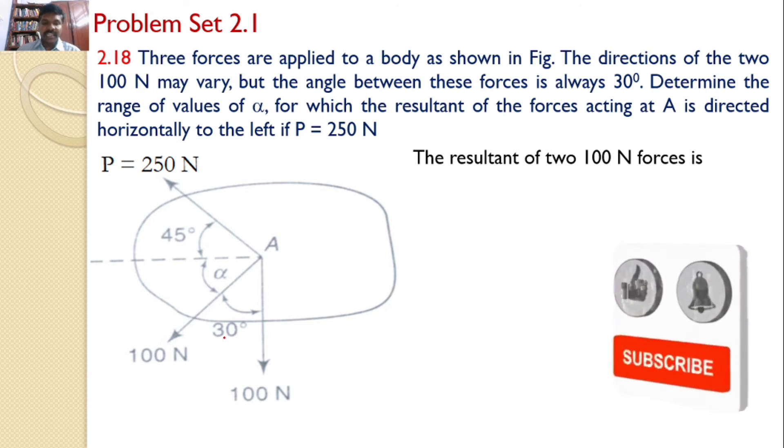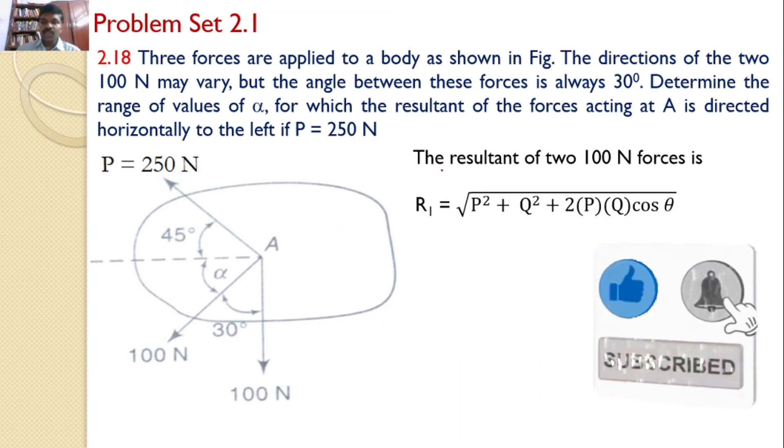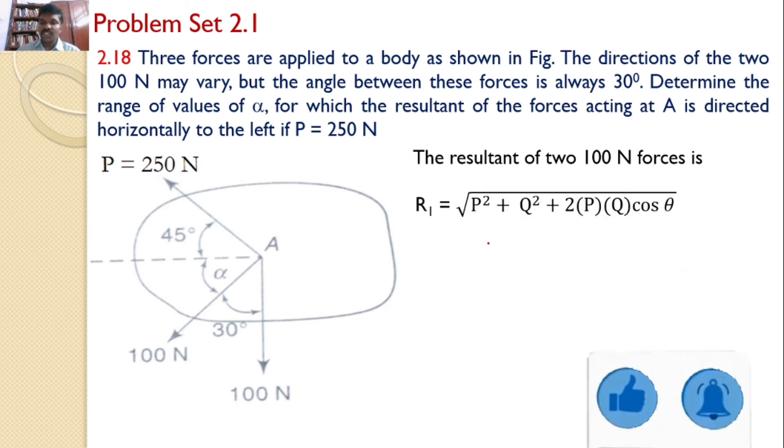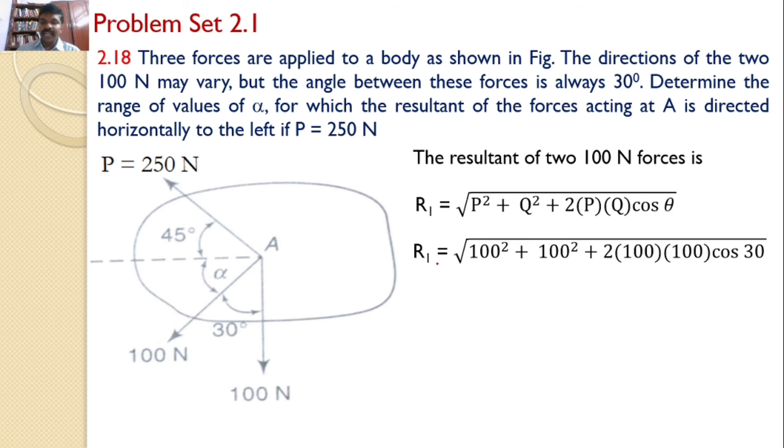So, I can find the resultant by using this formula just now we discussed. And after substituting that R1 equals square root under 100 squared plus 100 squared plus 2 into 100 into 100 into cos 30, I will get 193.2 newtons.